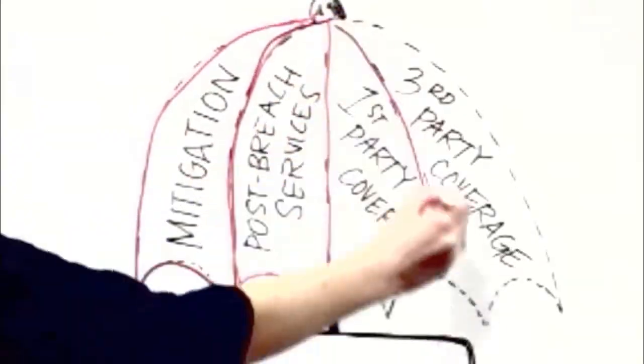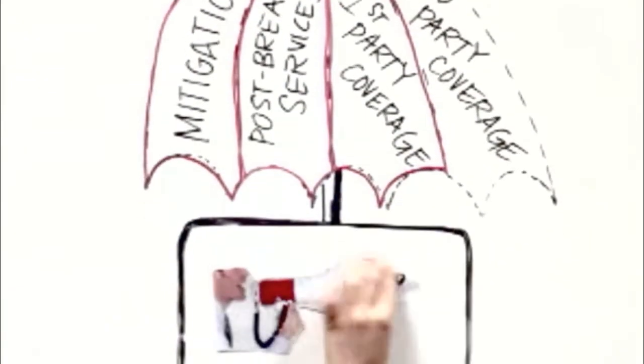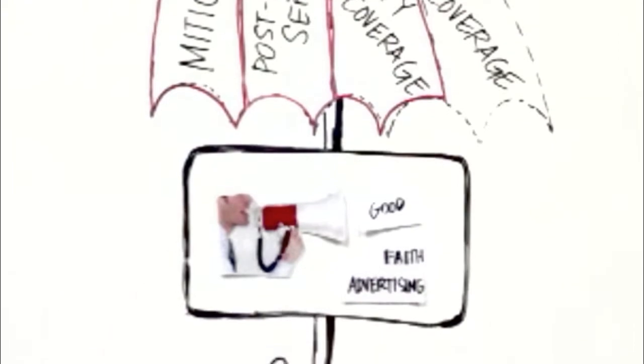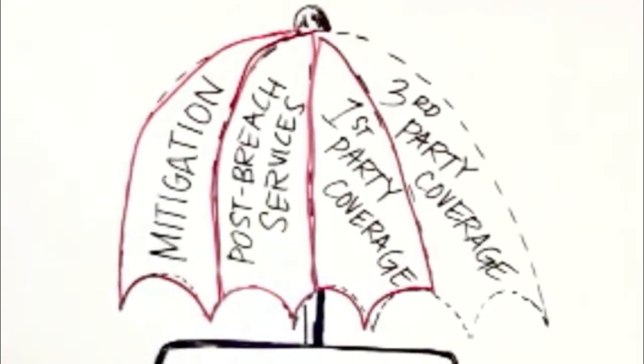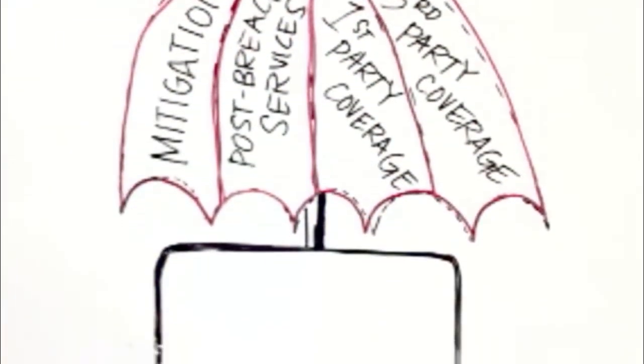First-party coverage can include forensics, credit monitoring, public relations expense, and good faith advertising. While third-party coverage can include defense, liability, related settlements, and or judgments.